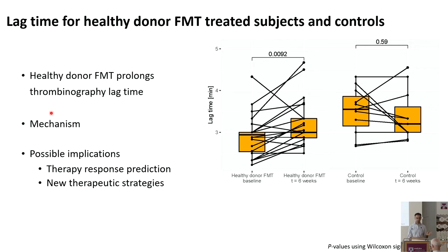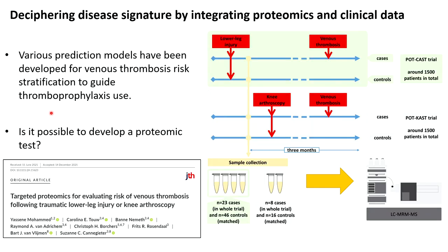The second example is about understanding how coagulation works in the blood. There are many models for when to give a patient anticoagulants or blood thinners, and these are not personalized — the doctor just decides. We got samples from the PODCAST trial, around 3,000 samples collected over three years.